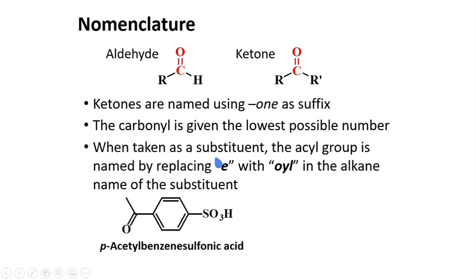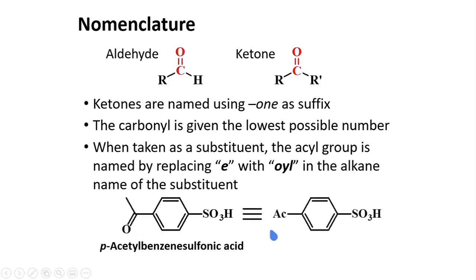When taken as a substituent, the acyl group is named by replacing '-e' with '-oyl' in the alkane name of the substituent. This compound is called p-acetyl benzene sulfonic acid — the acetyl group is attached to the ring at the para position. Acetyl can be simplified by writing 'Ac.' But in standardized nomenclature, we can call this 4-ethanoyl-benzene sulfonic acid.